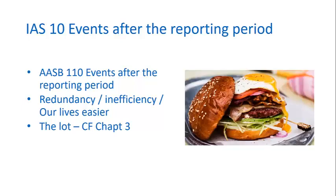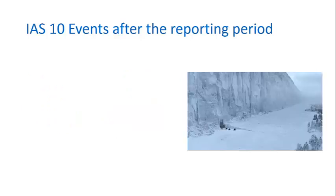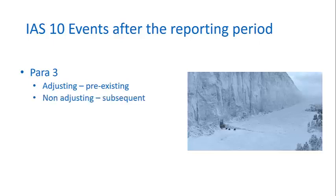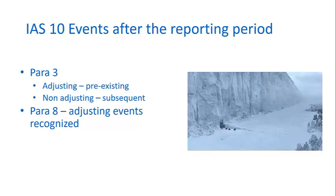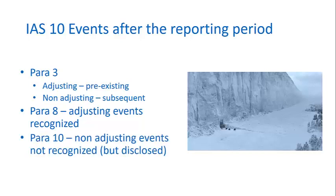IAS 10 effectively identifies the financial year-end as a wall. Things inside the wall are pre-existing events — events which occurred or existed before year-end — and they're described as adjusting events. Things outside the wall, after year-end, are non-adjusting items. The general principle is that adjusting events are recognised in the financial statements. Non-adjusting items should not be recognised in the financial reports; however, they should still be disclosed in the notes to the financial statements.